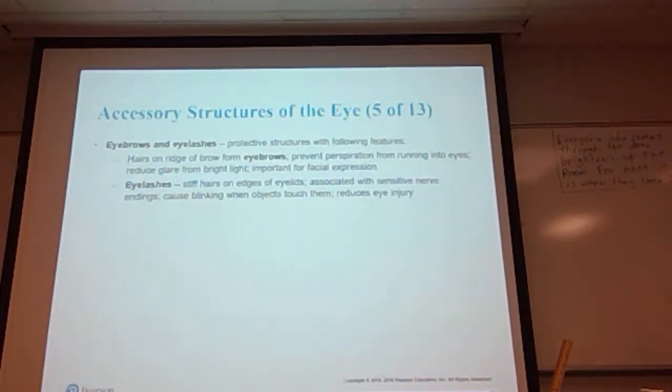The eyebrows and eyelashes are protective structures with the following features. The eyebrows are hairs on the ridge of the brow that prevent perspiration from running into the eyes, reduce glare from bright light, and are important for facial expression. The eyelashes are stiff hairs on the edges of the eyelids.